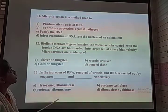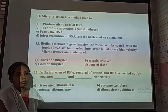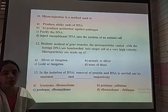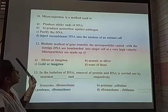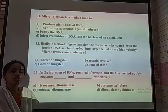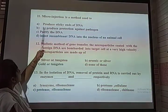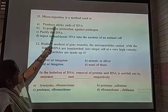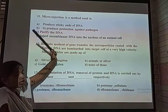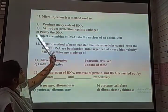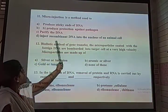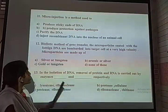Microinjection is a method where rDNA is directly introduced into the nucleus of a cell. The correct option is that microinjection injects the recombinant DNA into the nucleus of an organism. The biolistic method of gene transfer involves micro-particles coated with foreign DNA being bombarded into the target at a very high velocity. The DNA is coated with microparticles like gold or tungsten, used in a gene gun or biolistic gun.